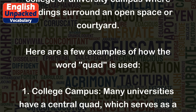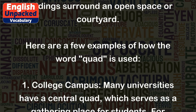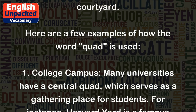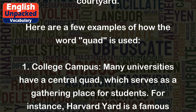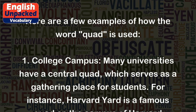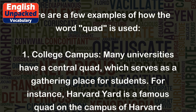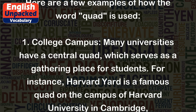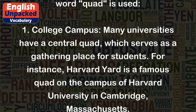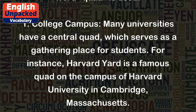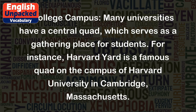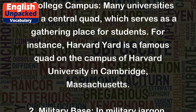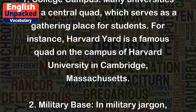1. College campus. Many universities have a central quad, which serves as a gathering place for students. For instance, Harvard Yard is a famous quad on the campus of Harvard University in Cambridge, Massachusetts.